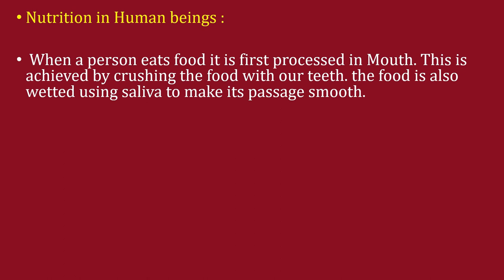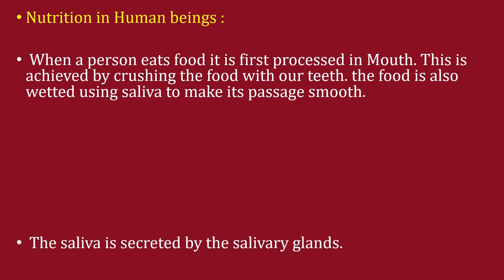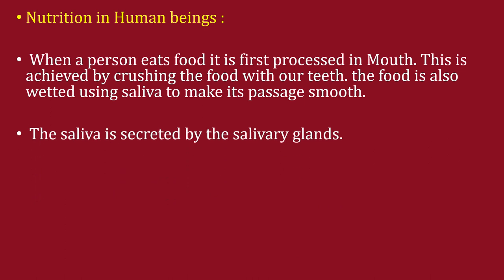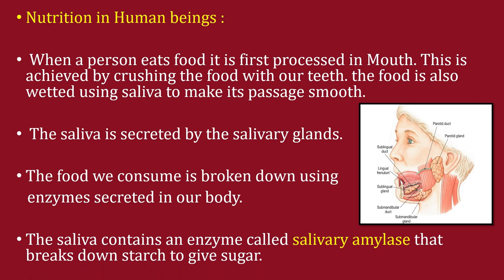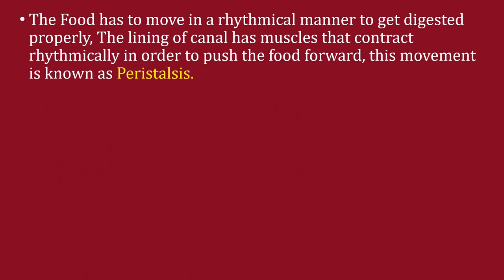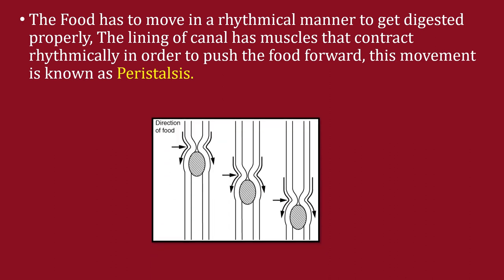When a person eats food, it is first processed in the mouth by crushing with teeth and wetting with saliva, which is secreted by the salivary glands. The saliva contains an enzyme called salivary amylase that breaks down starch into sugar. The food then moves rhythmically through the canal — the lining has muscles that contract rhythmically to push food forward, a movement known as peristalsis in the esophagus.